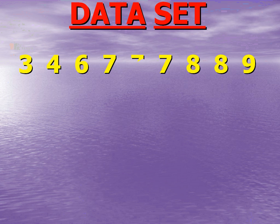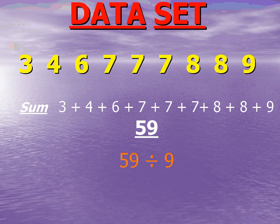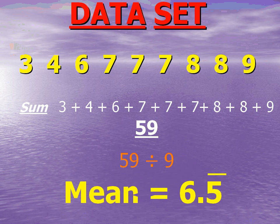The next thing I want to look at is the mean. By definition, the mean is the average. To find the average, you take all nine numbers in your data set and add them all up. When you add them all up, you get 59 in this set of data. Then you divide by how many numbers you added up, which is nine. 59 divided by nine is 6.5 repeating — notice the bar, which symbolizes the fives continue forever. In mathematics, this average is referred to as the mean. Mean and average mean exactly the same thing.